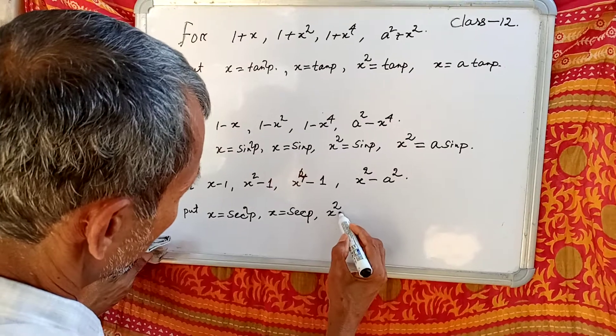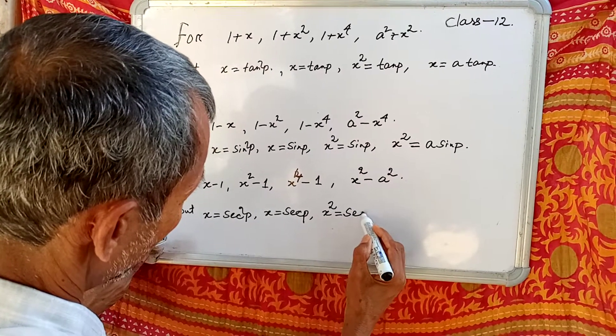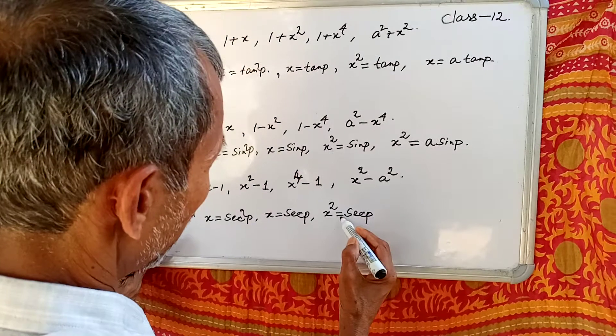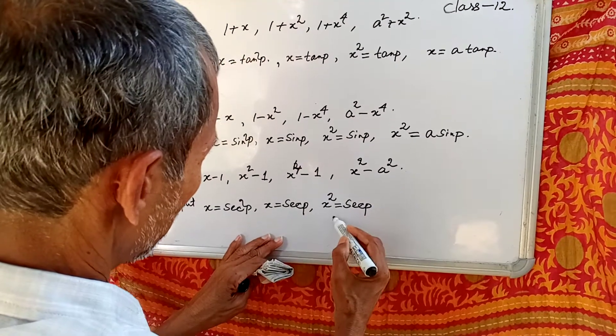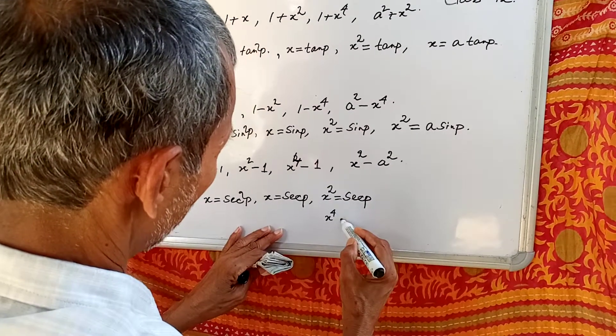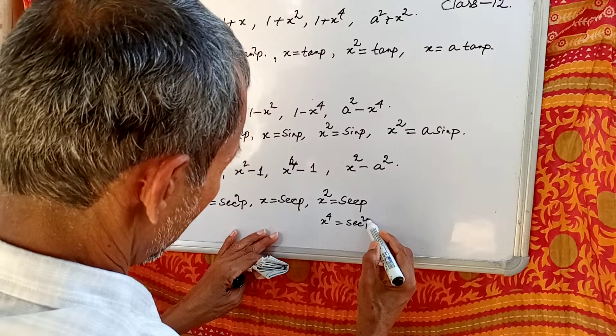x² equal to sin θ. If x² equal to sin θ, then x to the power 4 equal to sin² θ.